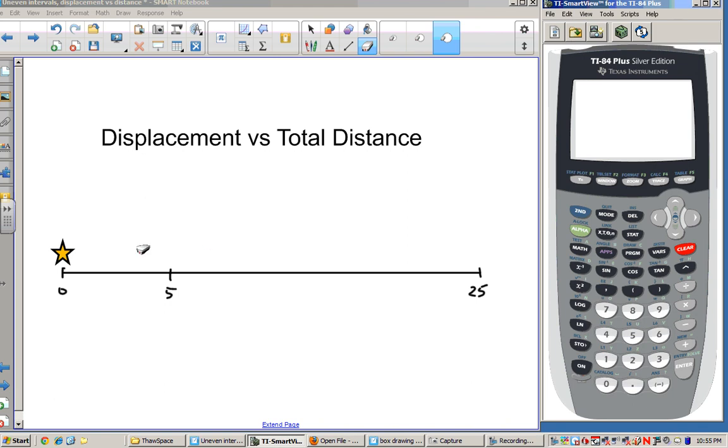In this lesson, we're going to consider the difference between displacement and total distance. Let's first consider this star right here, and what happens when this star moves all the way to the end here, up to 25, and back to 5.